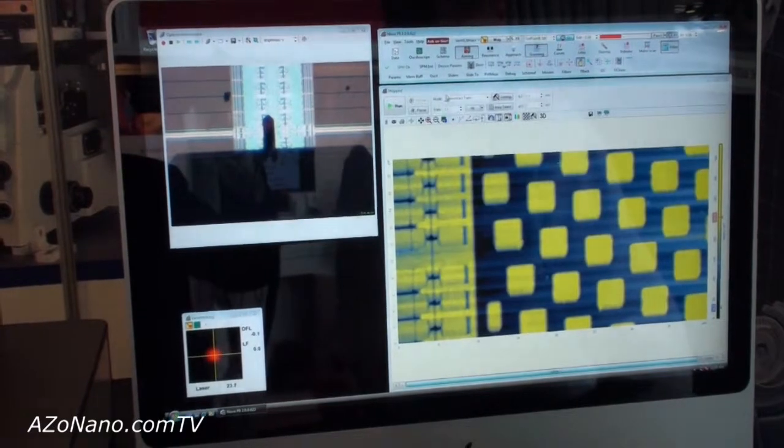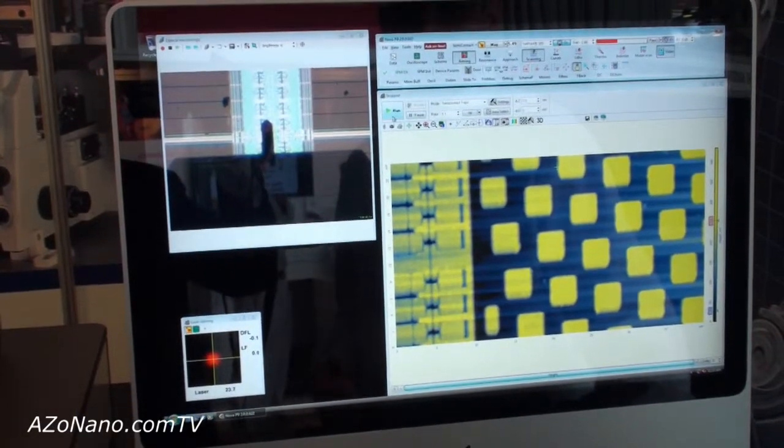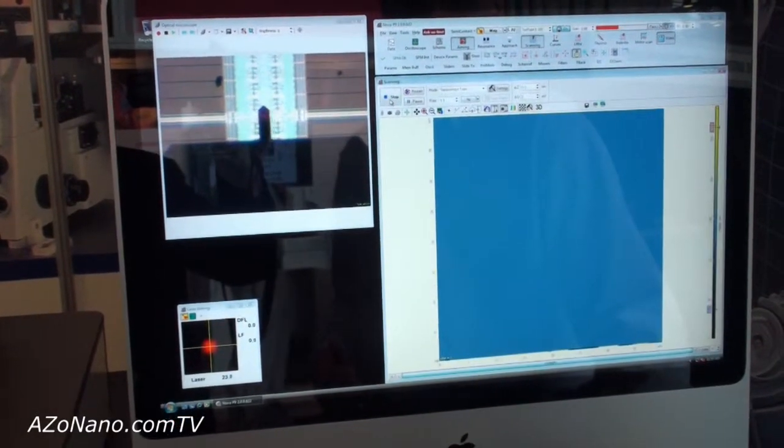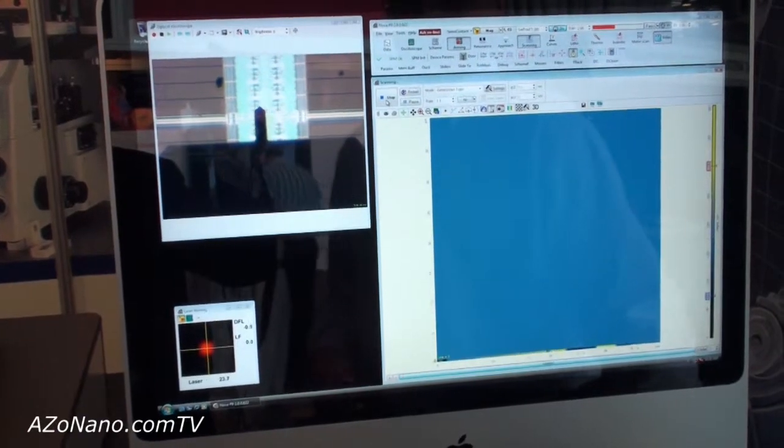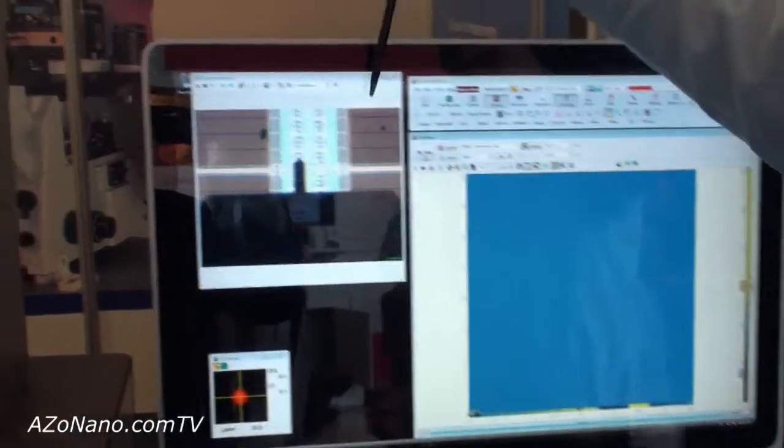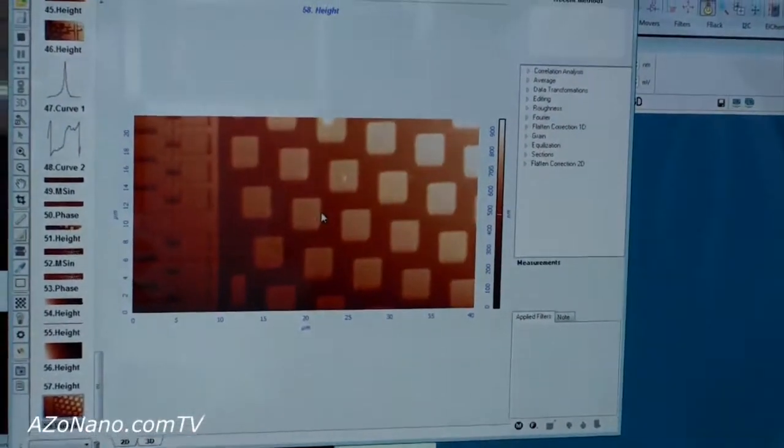Approach done, and we can start scanning. In the optical image you can view the sample moving under the tip, making the raster scanning. Line by line the image appears, so when it's done we get a 2D image, for example like this one.